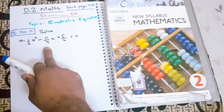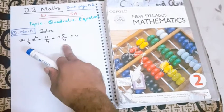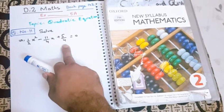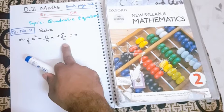1 over 2x square minus 11 over 4x plus 5 over 4 equals 0. This is part of the advanced levels question.